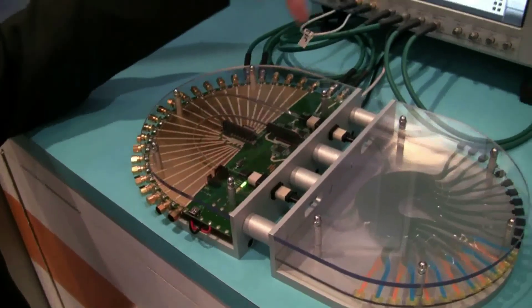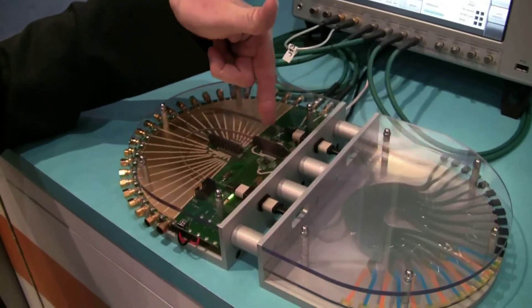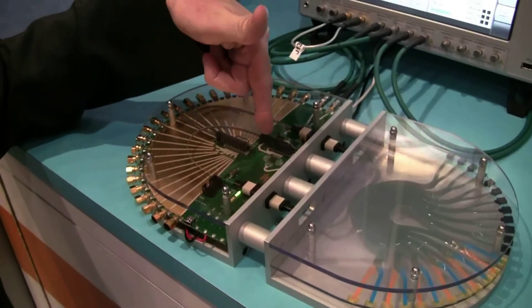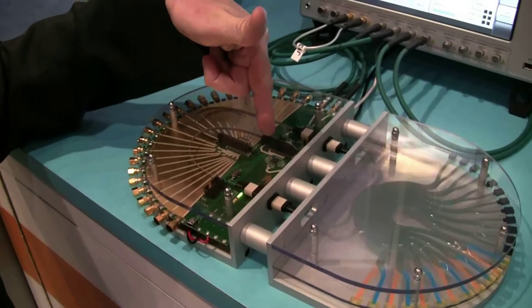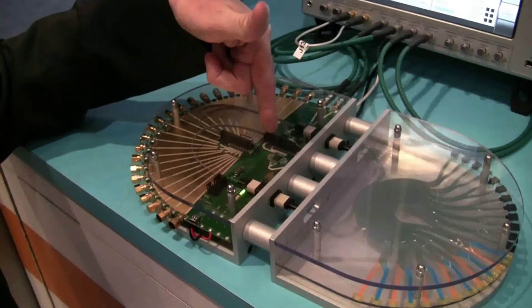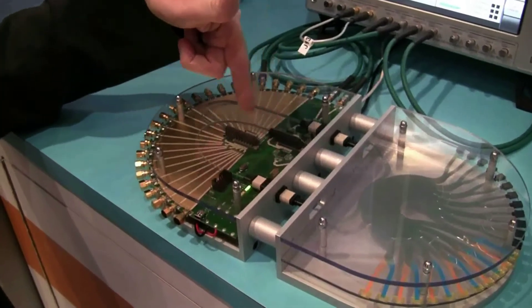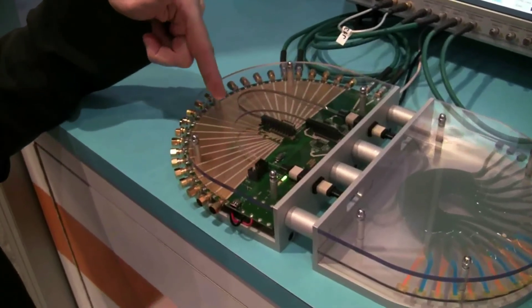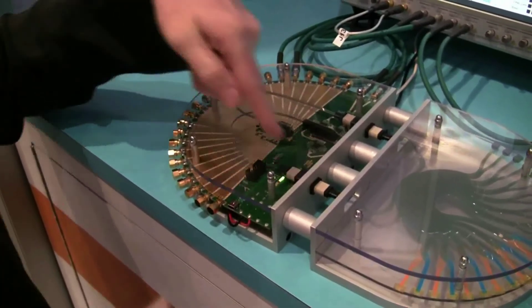The demo consists of 12 channels of 10 gigabit traffic coming to the TX optical module. The module does an electrical to optical conversion, transmits the data at 850 nanometer down a ribbon fiber through a connector,